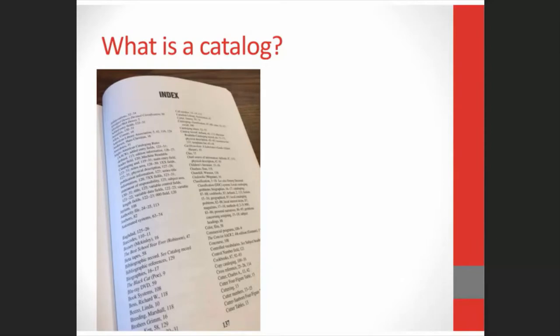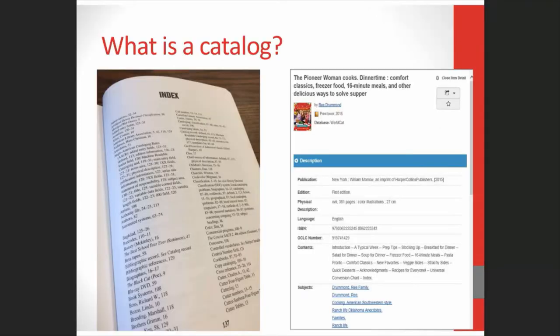The catalog also has information that's useful for searching, such as the author's name, the title, and some subjects. When you see all this information on the computer screen, we call it the catalog record.